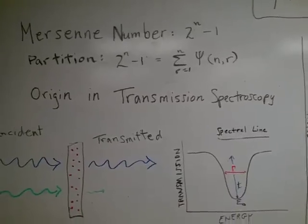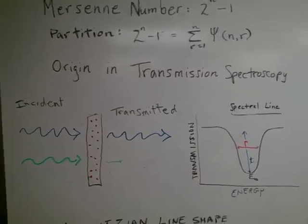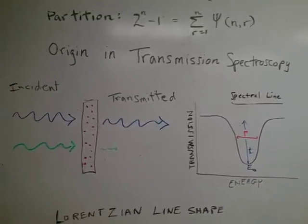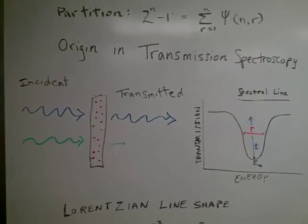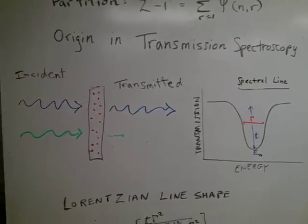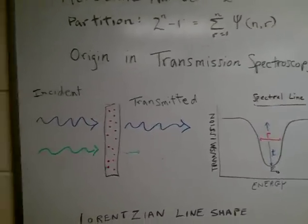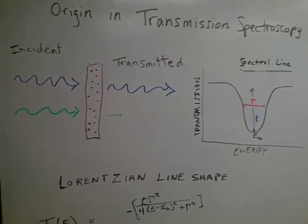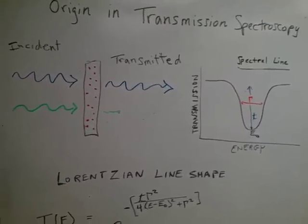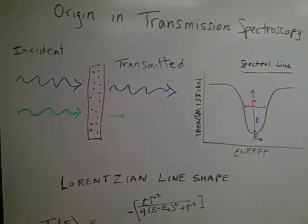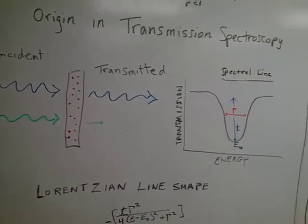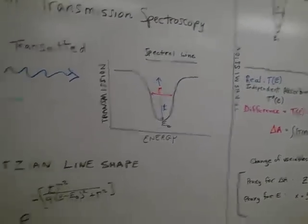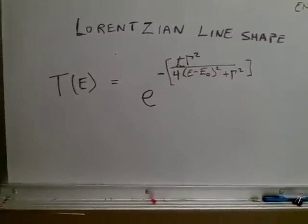Let me explain that just a little bit. If you have incident radiation going through an absorbing medium, the amount that gets transmitted depends on the energy of the incident radiation and also on the energy at which the absorber absorbs radiation. If those two are far apart, then almost all the radiation gets transmitted. If they are close together, then the radiation coming through gets attenuated quite a bit.